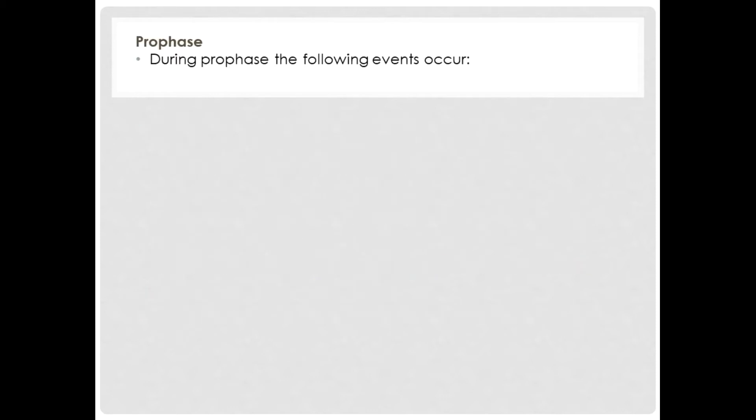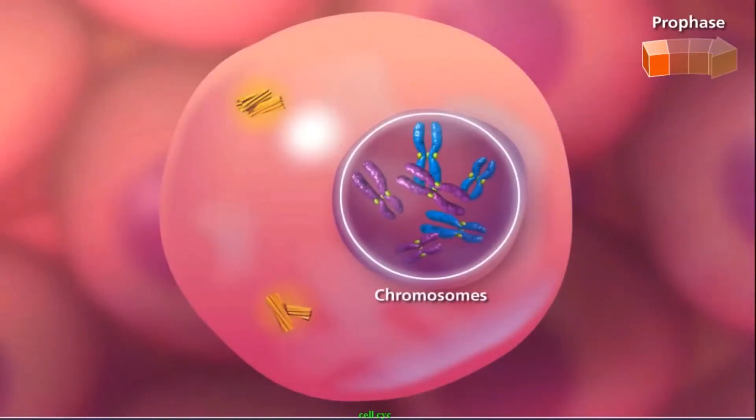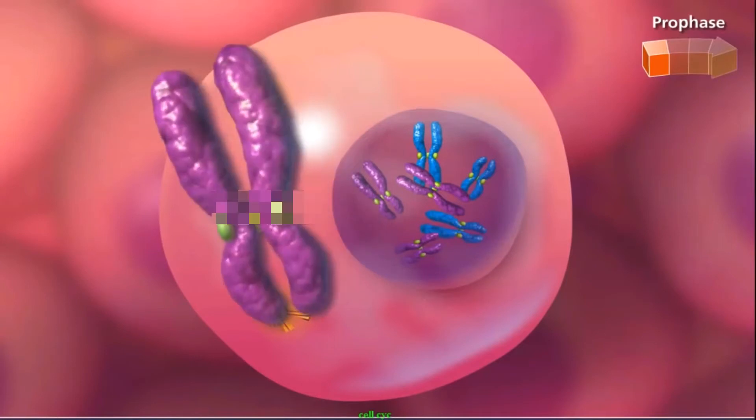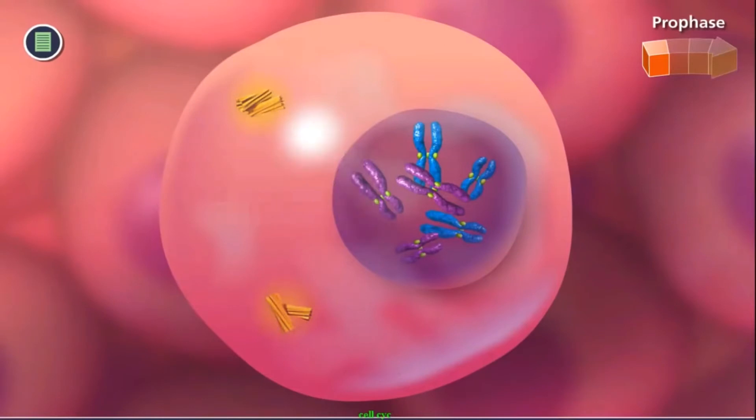Now let's look at prophase. During prophase the following events occur: The chromosomes become visible as long thin tangled threads. Each duplicated chromosome is seen as a pair of sister chromatids joined by the duplicated but unseparated centromere. The nucleolus disappears during prophase.